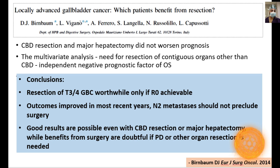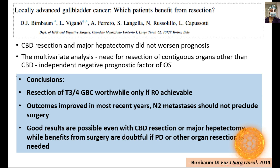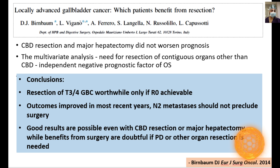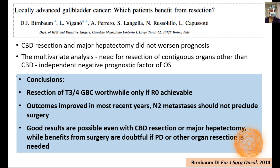The conclusion from this landmark paper is that resection of T3/T4 gallbladder cancer is worthwhile if R0 resection can be achieved, and N2 metastasis should not preclude surgery. Good results are possible with CBD resection or major hepatectomy, but the benefit of CPD or other organ resections beyond the CBD is doubtful — with zero percent three-year survival when extrahepatic organs other than CBD required resection.